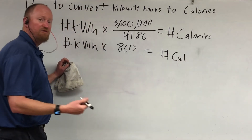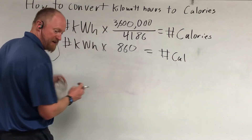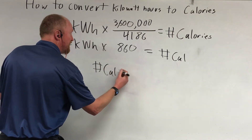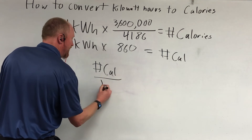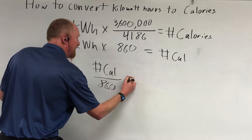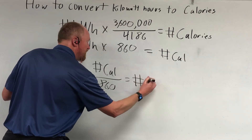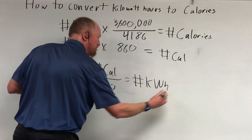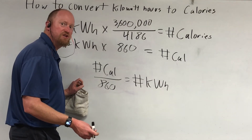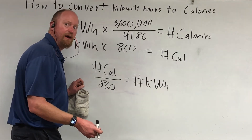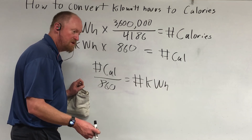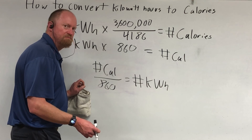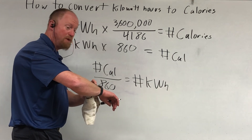If you want to go the other way, take the number of calories and divide it by 860 — that gives you kilowatt hours. In case you were thinking about getting a bicycle power generator and want to know how much to increase your food intake to power your house — don't do it, it's not worth it. Hope this has been helpful, have a nice day!